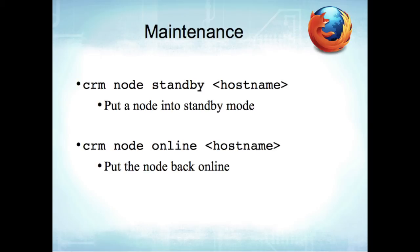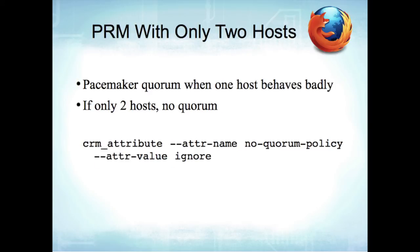If you're using Percona Replication Manager with only two hosts, be aware of quorum. When one host behaves badly, it takes a quorum of the other hosts to decide what to do. With only two hosts, there's no quorum — one machine dies, there's only one left, no majority possible, so by default the other machine won't pick up the slack. If you don't have more than two machines, add the 'no-quorum-policy: ignore' setting so Pacemaker will still perform failover even with just one remaining node.